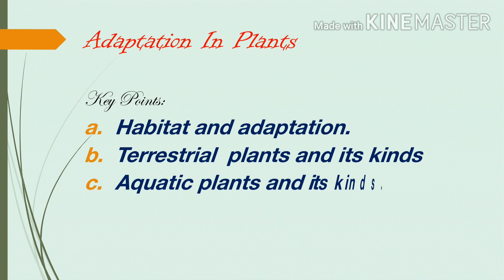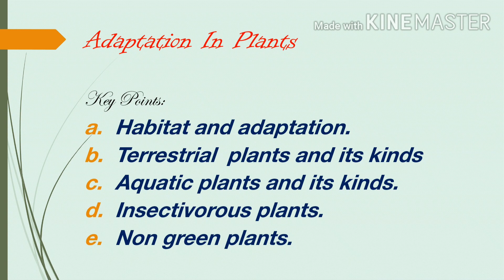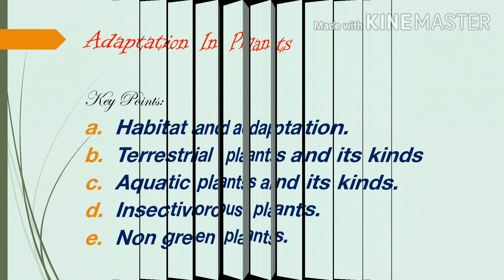Plants are found almost everywhere on the earth. Plants grow in various regions — some on mountains, some on plains, desert, and even in water. There are various species of plants and they adapt themselves to grow in particular regions. The key points we will discuss today are: habitat and adaptation, terrestrial plants and their kinds, aquatic plants and their kinds, and insectivorous and non-green plants.